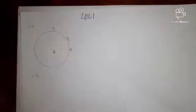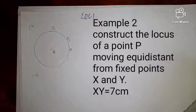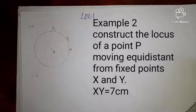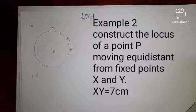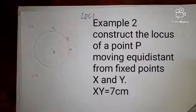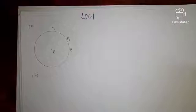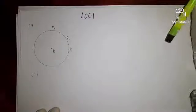Let's look at sample number 2. We are now asked to construct the locus of a point P moving equidistant from fixed points X and Y, where XY is equal to 7 cm. So how do we get the locus of a point moving equidistant from two fixed points when we have the distance between the points? In this case, we are going to have 7 cm between the two points X and Y, so we measure our 7 cm first.